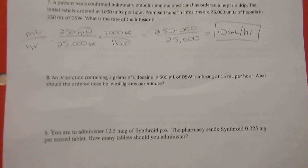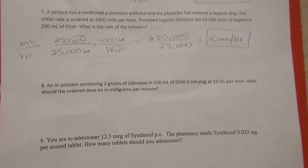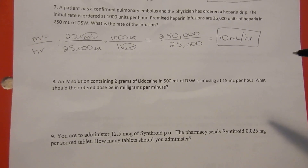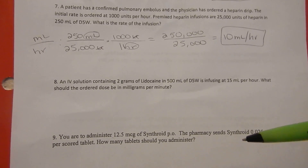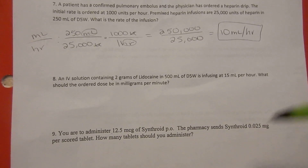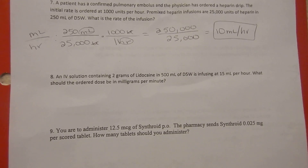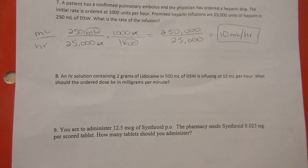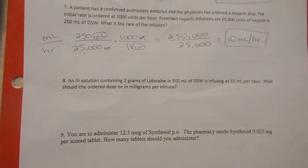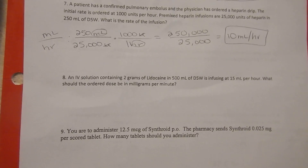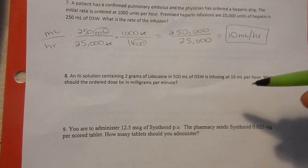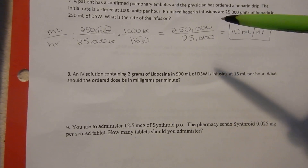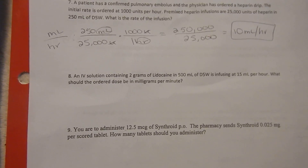Hey guys, it's Kim here. I'm going to be doing some math today for some of you who may be in nursing school and need to do the med math. I'm going to be using dimensional analysis. We're going to be doing milliliters per hour, milligrams per minute, micrograms per kilogram per minute, whatever. So I'm going to show you how to do these. Hopefully you can learn something from them. If you're anything like me and you hate math, this is a really easy method. You always get it right, it seems like. So let's go ahead and get started.